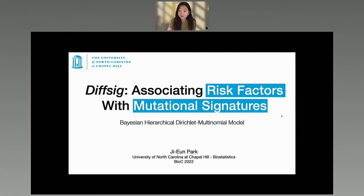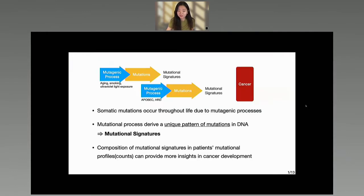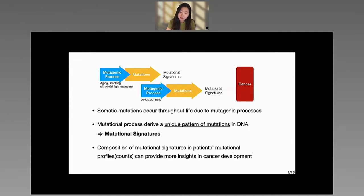Today I'd like to share my recent project on finding associated risk factors with mutational signatures. I noticed there were a lot of signatures presented in this talk, so I want to start by clarifying what mutational signatures are. In the human body, somatic mutations occur throughout life and can be derived by mutagenic processes such as aging or smoking. Additional mutations can also be derived by existing mutations due to, for instance, APOBEC activity or homologous recombination deficiency. Each of these mutagenic processes leaves a unique pattern in the DNA — we call this mutational signatures. As somatic mutations accumulate and become excessive, they eventually develop into cancer.